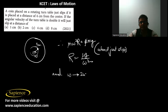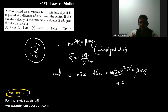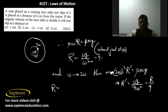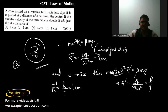When omega is doubled to 2ω, then m·(2ω)²·r' equals μmg, so r' equals μg / (4ω²) which equals r/4. Since r is 4 centimeters, r' equals 1 centimeter. At 1 centimeter the coin will just slip when the angular velocity is doubled. Option A is the correct answer.